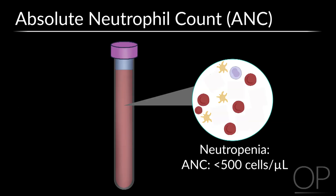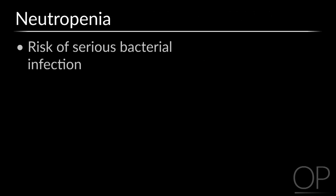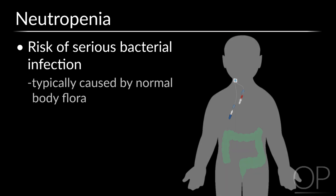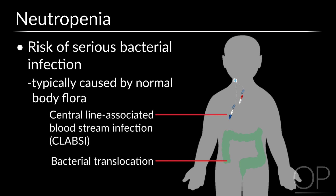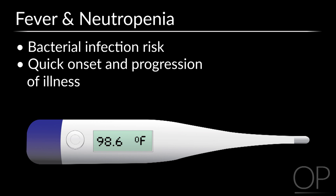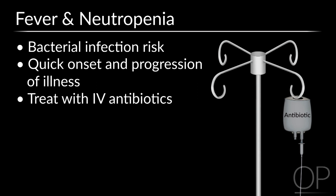We typically define neutropenia as an absolute neutrophil count of less than 500 cells per microliter. Patients with neutropenia are at risk of serious bacterial infections. While patients with neutropenia can develop infections from a variety of causes, typically bacterial pathogens are due to normal body flora, such as translocation of bacteria from the gut or skin flora getting into a central line. Unfortunately, neutropenic patients can get very sick very quickly in the setting of a bacterial infection. Though not every fever in a patient with neutropenia is due to bacteremia, we empirically treat for bacteremia with IV antibiotics given the very high morbidity and mortality from serious bacterial infections in these patients.